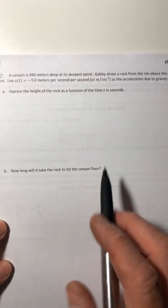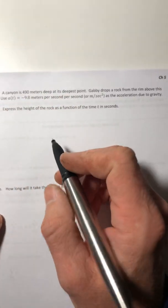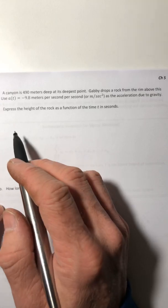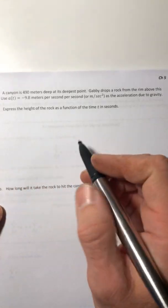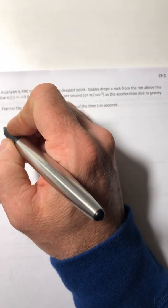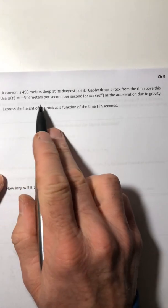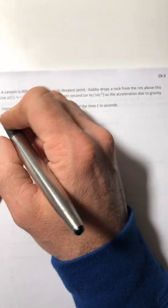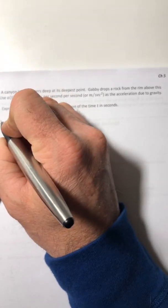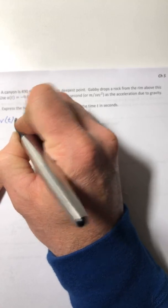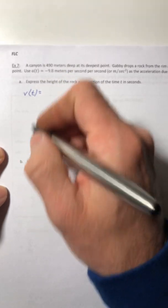Okay, express the height of the rock as a function of time. So we got to do the same thing. So we are going to integrate acceleration to give us velocity because if we want the height, we got to get all the way to the position. So we got to work our way up.